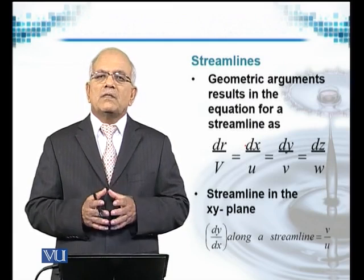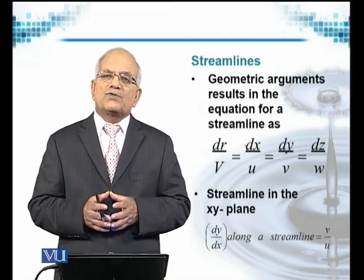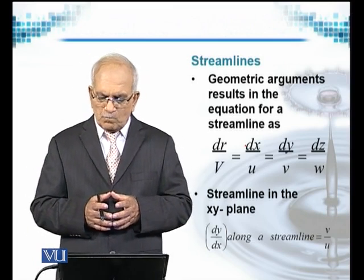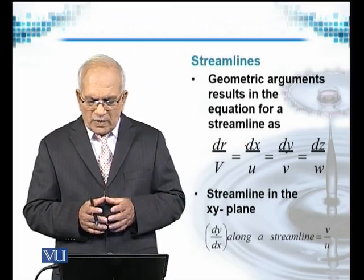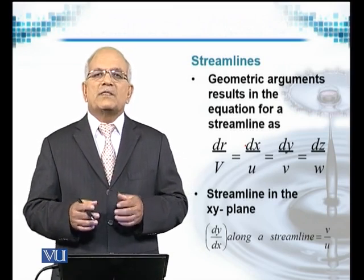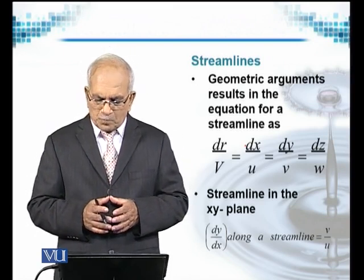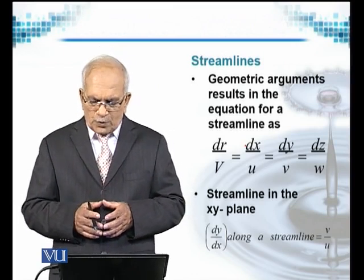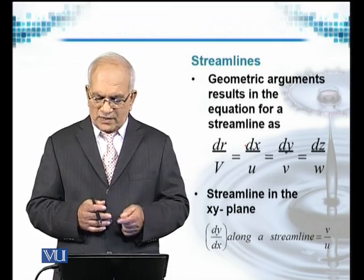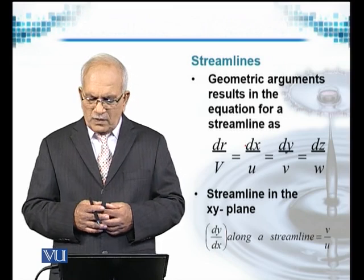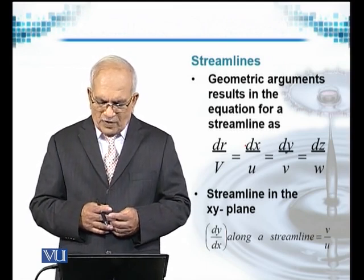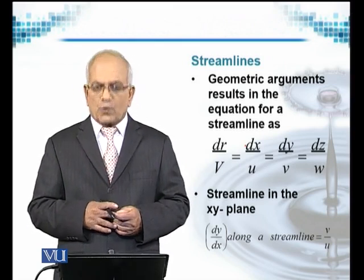If we need to give an equation that represents streamlines, then the equation for a streamline in three-dimensional geometry is represented by the ratios: dr/v = dx/u = dy/v = dz/w, where v is the velocity vector, u is the component in x, v the component in y, and w the component in z. The streamline in the x-y plane gives dy/dx along a streamline equal to v over u.